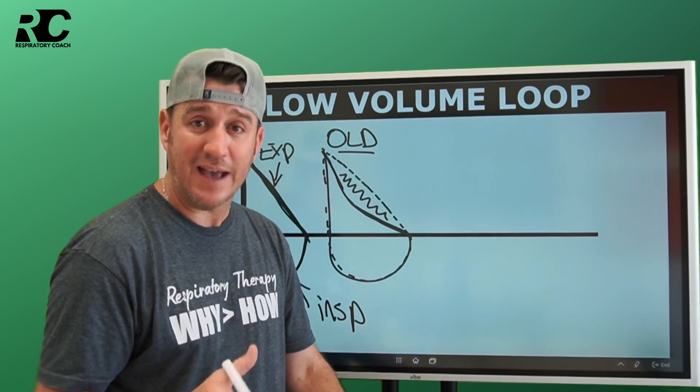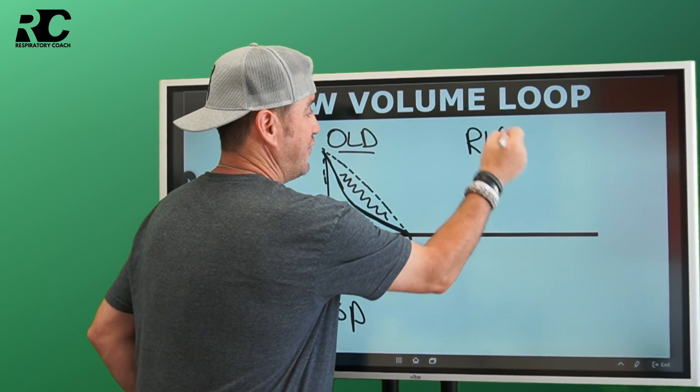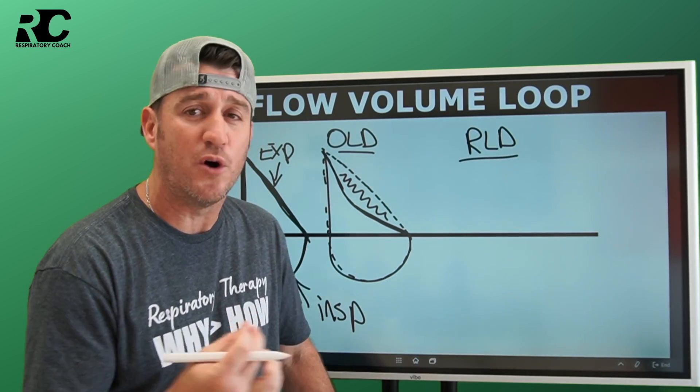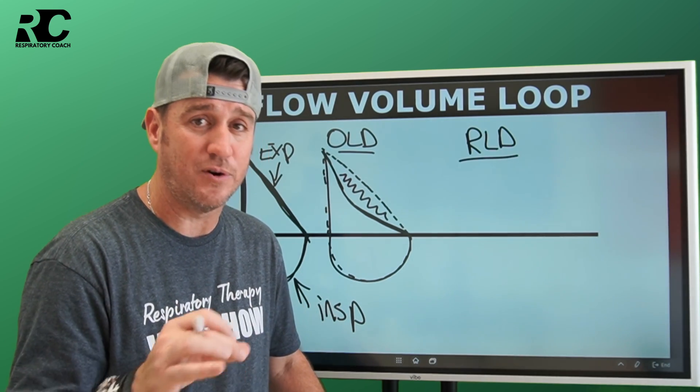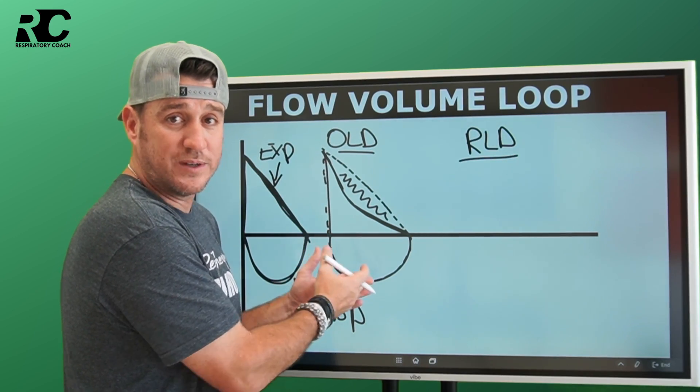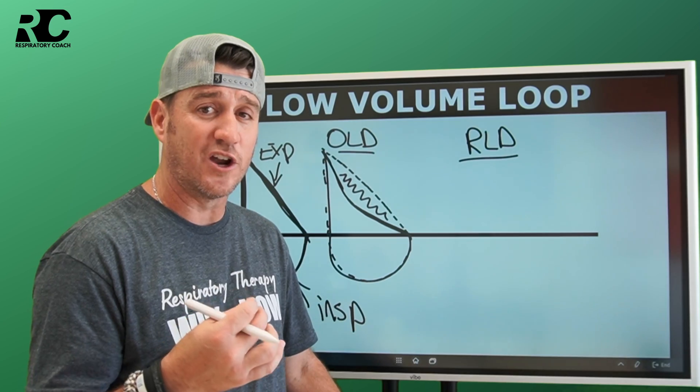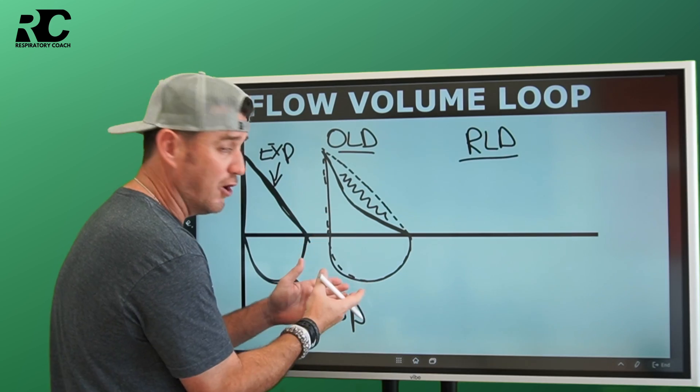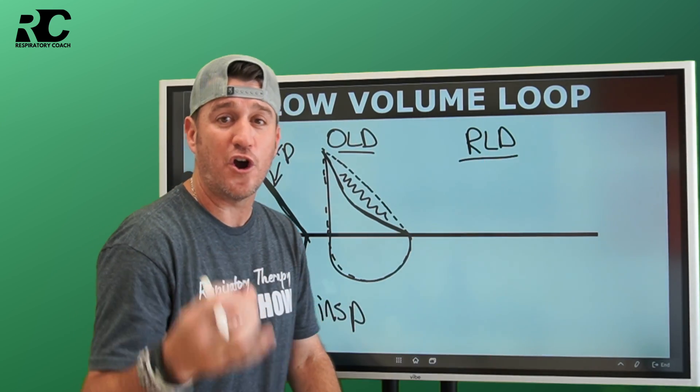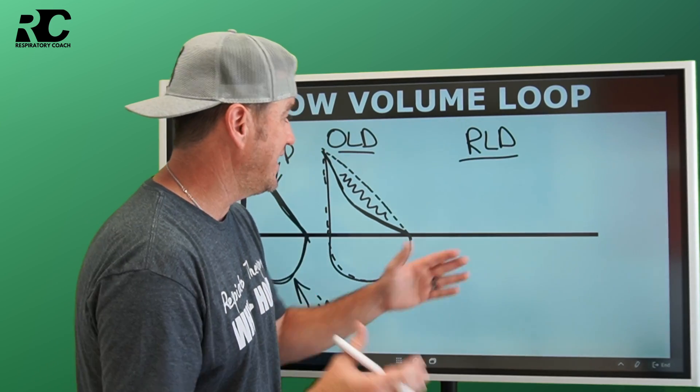Not every single patient who has a pulmonary disorder has obstructive lung disease. Some of them have restrictive lung diseases. That's what we say for RLD. For RLD, it's much easier because they are restricted to volumes. We think about our patients with pulmonary fibrosis in this situation. This is a good example of a restrictive lung disease. When we think about restrictive lung diseases, they don't have a problem getting the air out. They have a problem getting volume in.